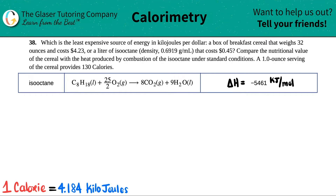Problem number 38: which is the least expensive source of energy in kilojoules per dollar — a box of breakfast cereal that weighs 32 ounces and costs four dollars and 23 cents, or a liter of isooctane with a density of 0.6919 grams per milliliter that costs 45 cents? Compare the nutritional value of the cereal with the heat produced by combustion of the isooctane under standard conditions. A one-ounce serving of cereal provides 130 calories.